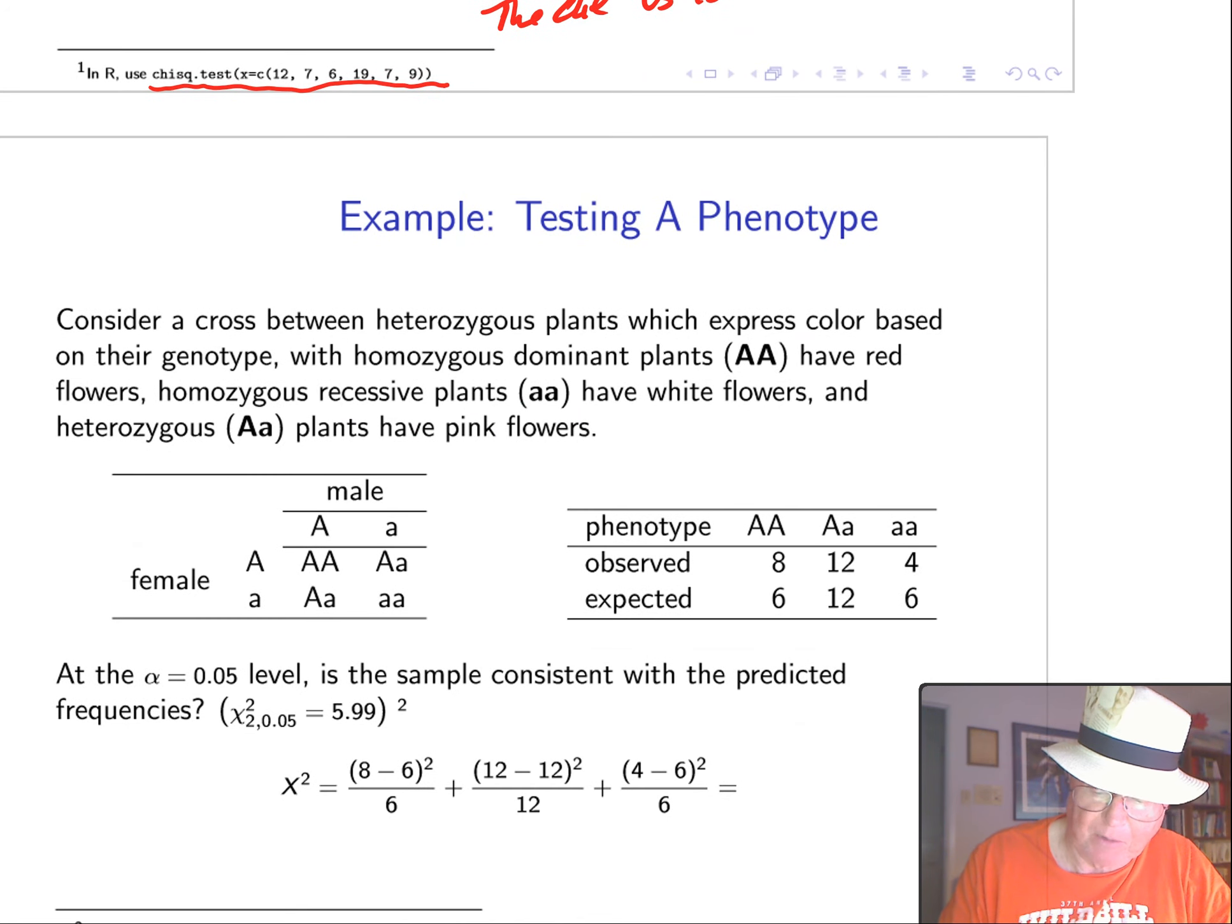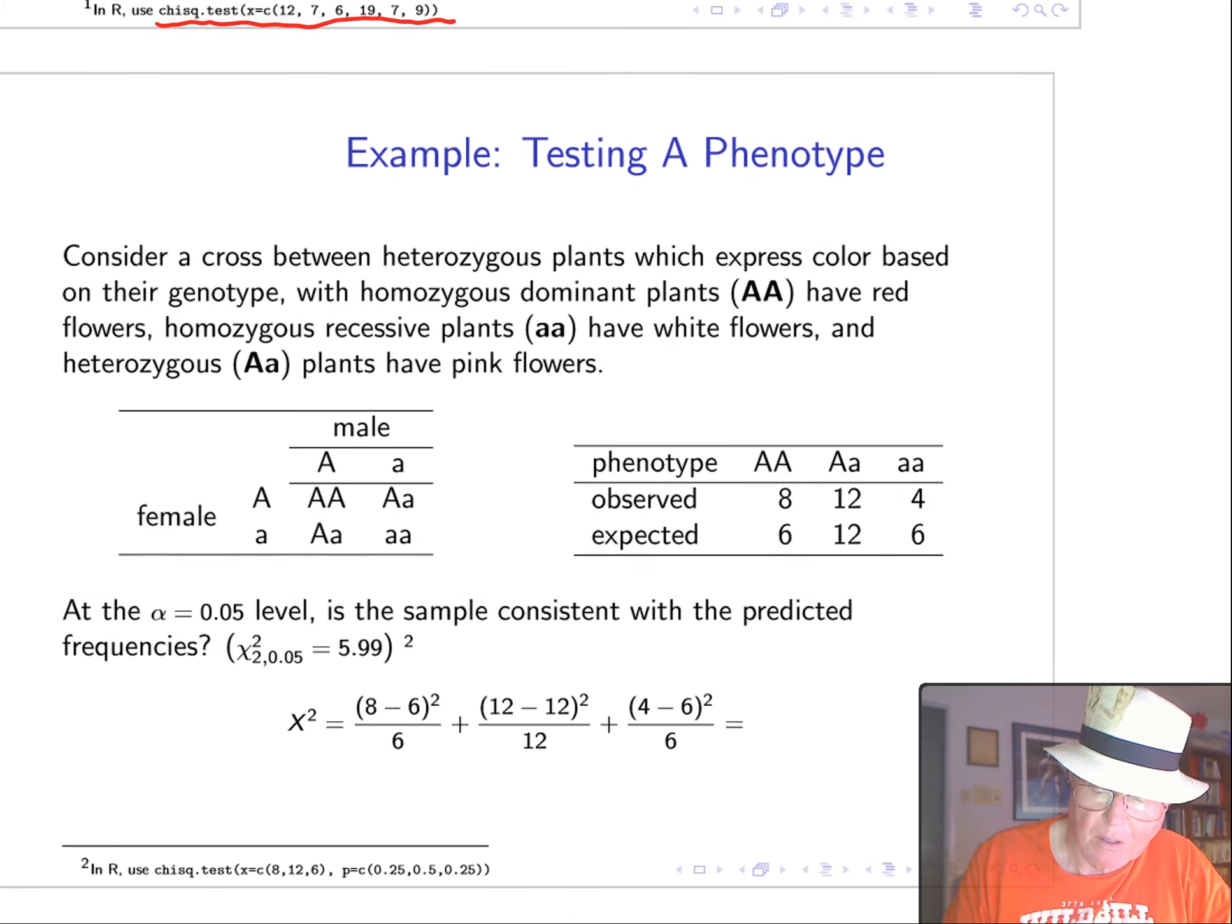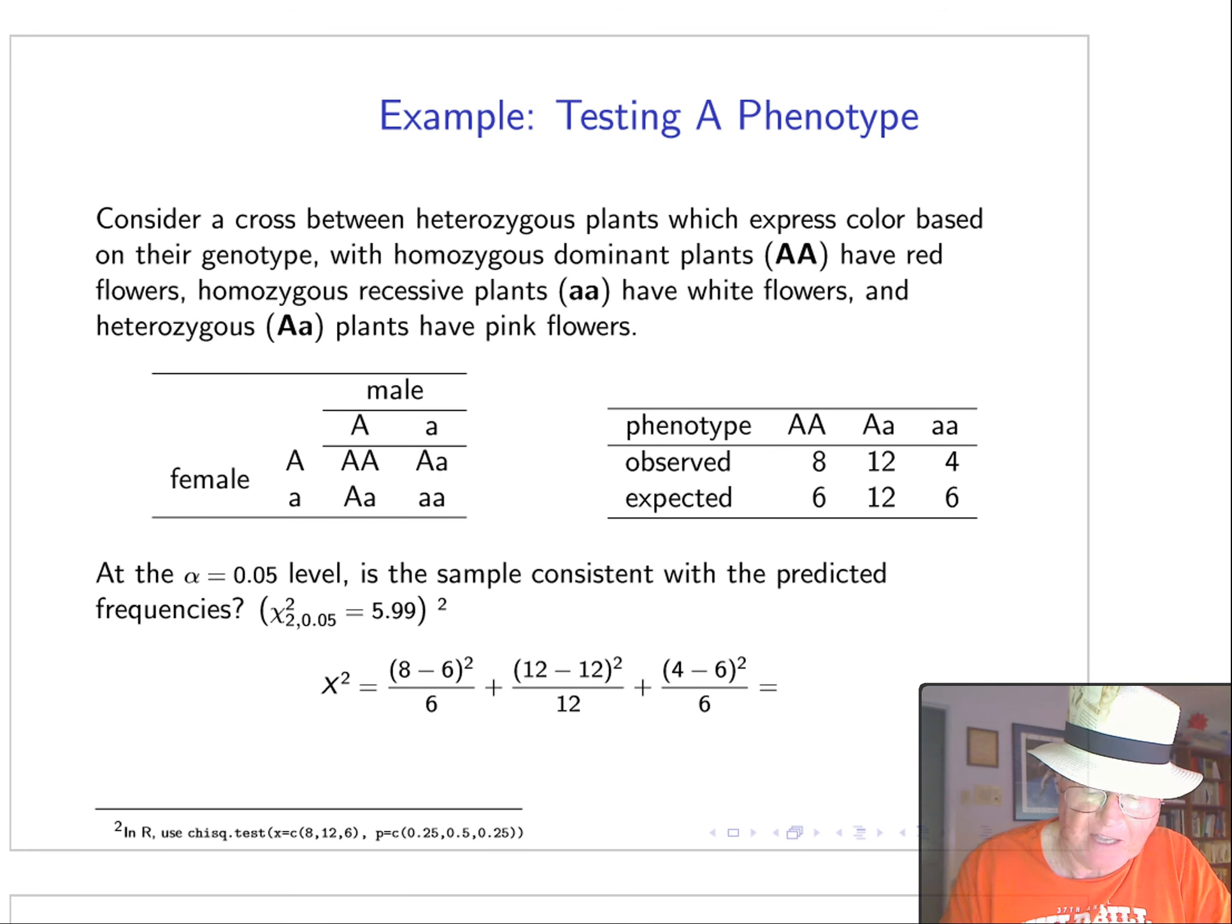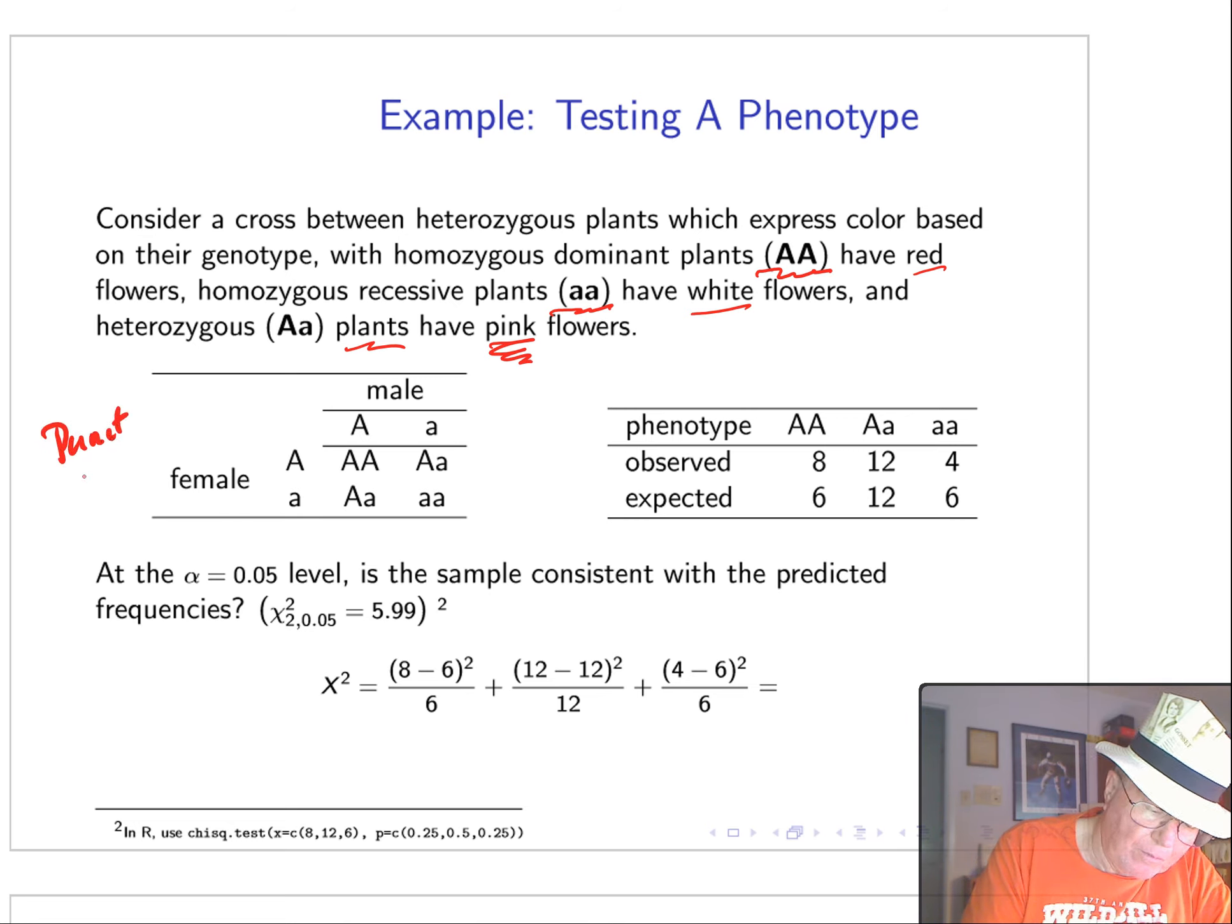So, let's look at something a little more related to biology. So, we'll take a really simple model from genetics. We're going to cross heterozygous plants, which express color based on a genotype, with homozygous dominant plants, that is, two dominant genes, having red flowers. Recessive plants, two recessives, have white flowers. And heterozygous crosses have pink flowers. So, if we go to Punnett square, showing the results of the crosses, we see that we get one dominant, one recessive, and two crosses, or mixed. So, we expect these to show up in the ratio of 1 to 2 to 1.